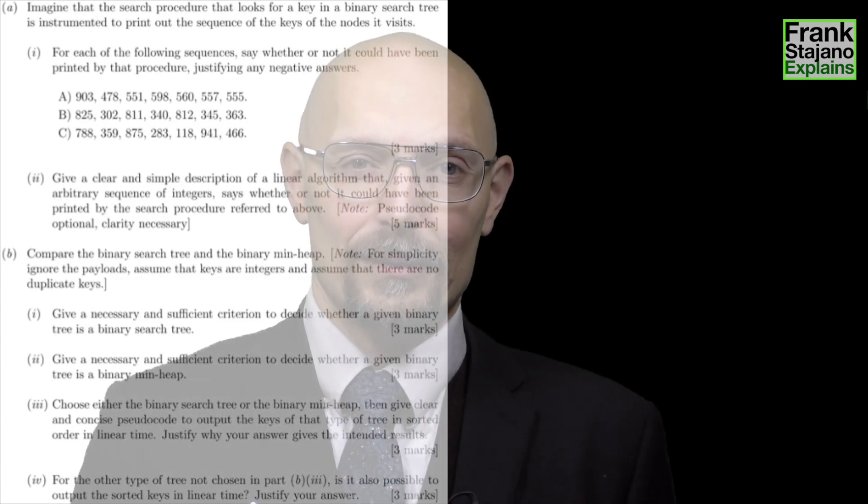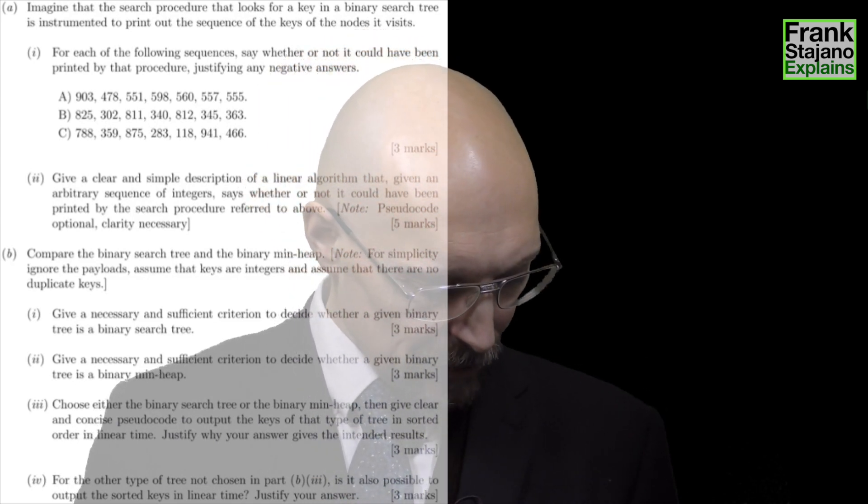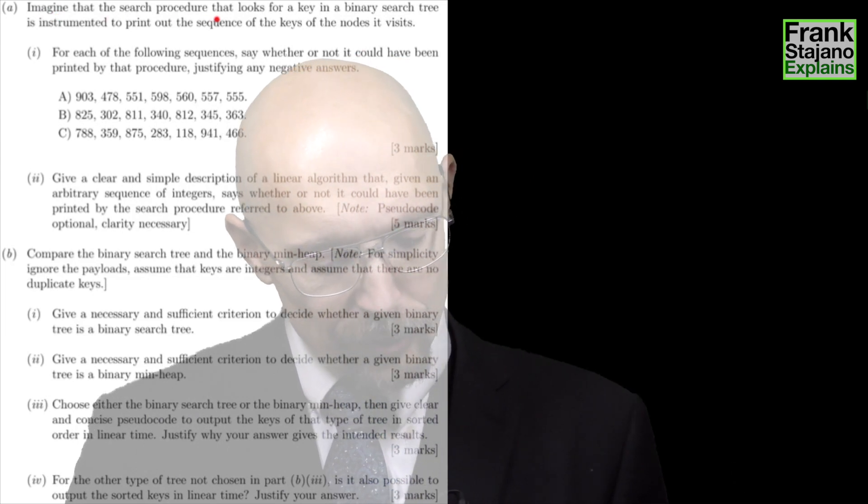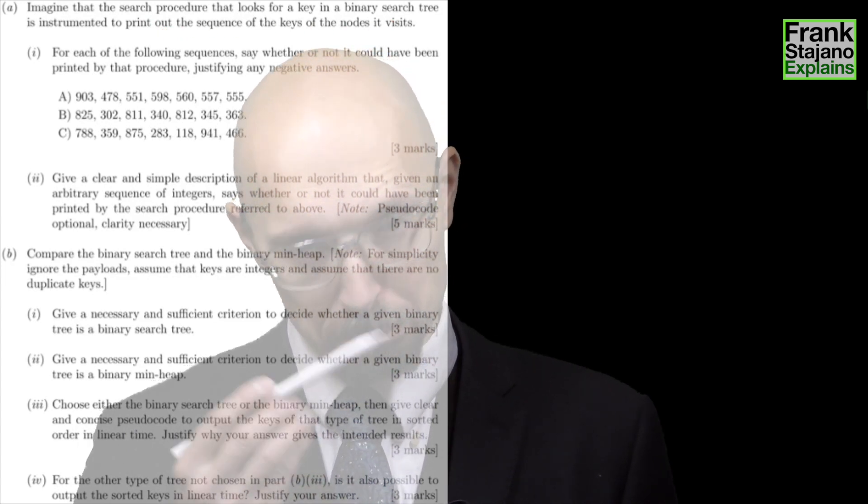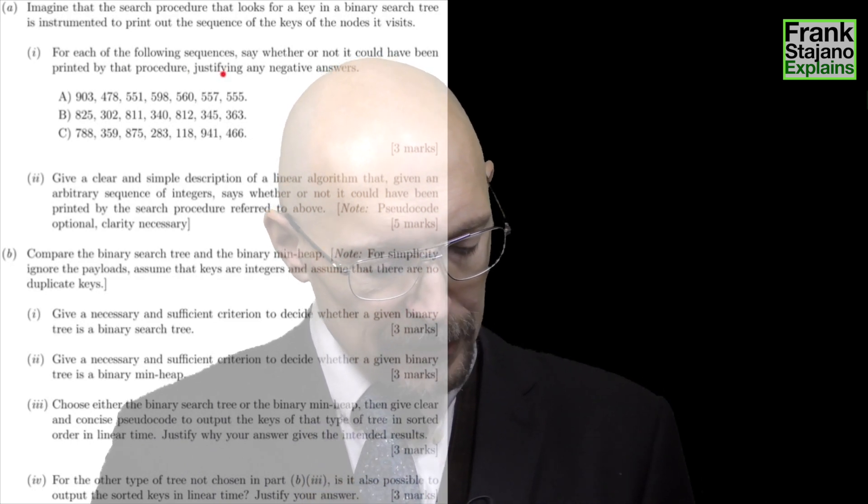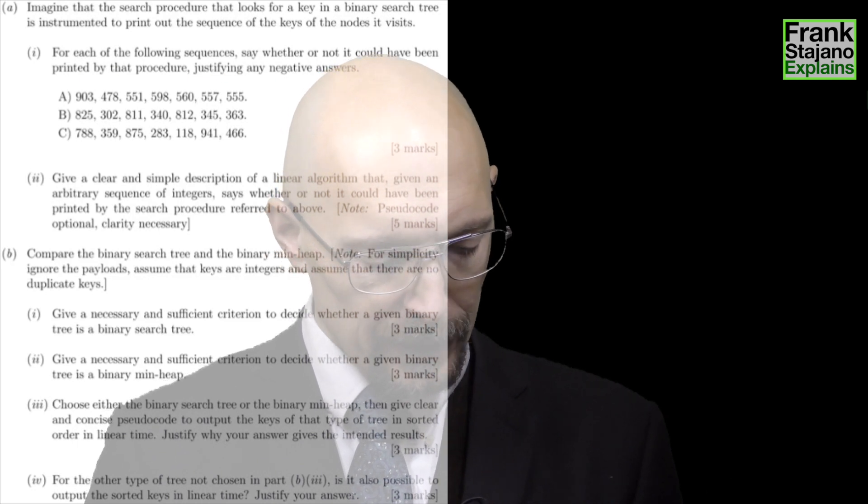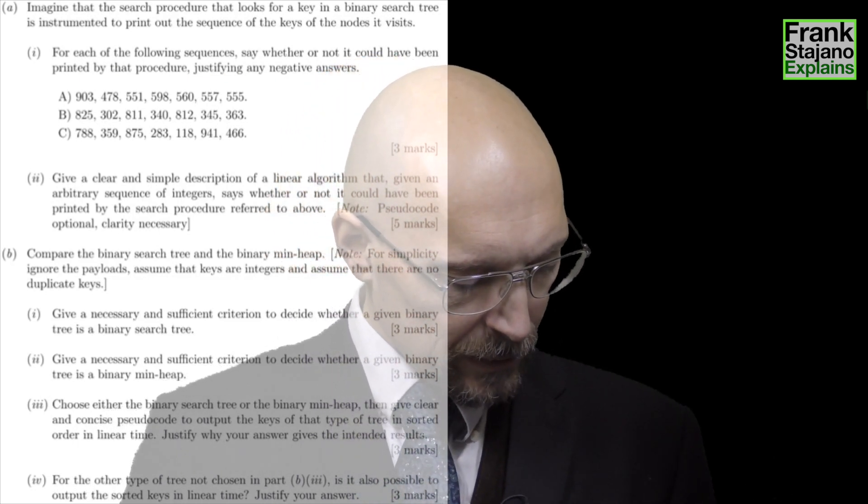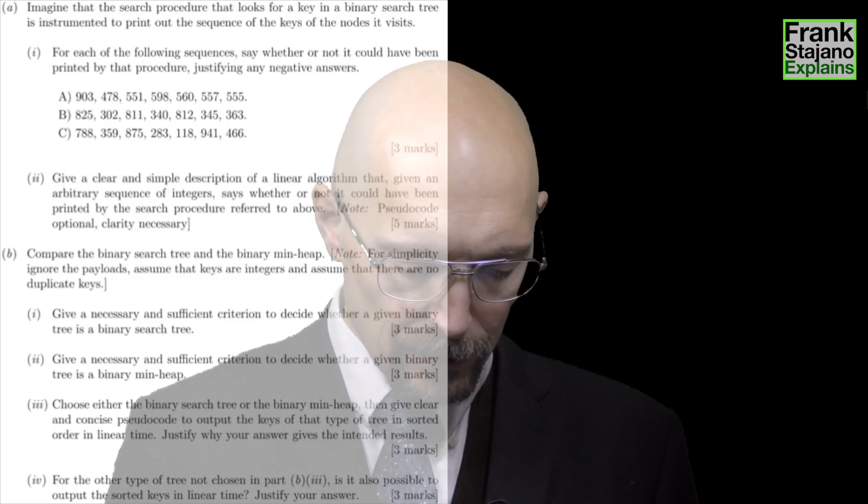All right, so if you're here I assume you have done the question yourself satisfactorily. Imagine that the search procedure that looks for a key in a binary search tree is instrumented to print out the sequence of the keys of the nodes it visits. So the first thing this prints is 903.